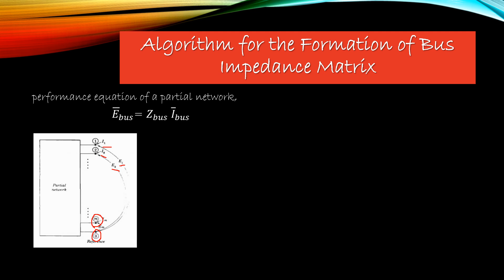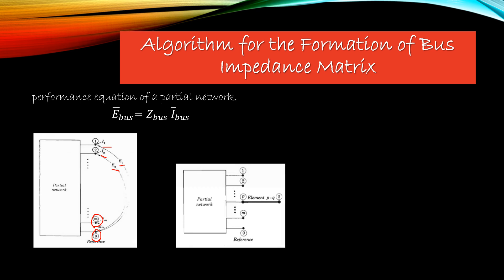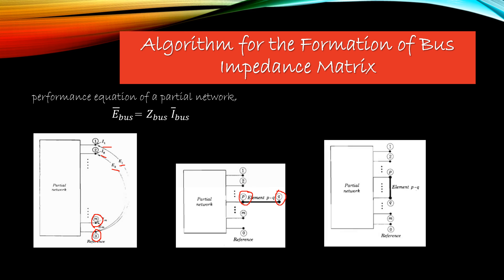For this partial network, if we add an element and a new bus is formed, that case will be called addition of branch, as you can observe in the second figure. Here, P is an existing bus of the partial network and Q is a new bus. For addition of link, element PQ is connected between P and Q where both bus P and bus Q are existing buses of the partial network.